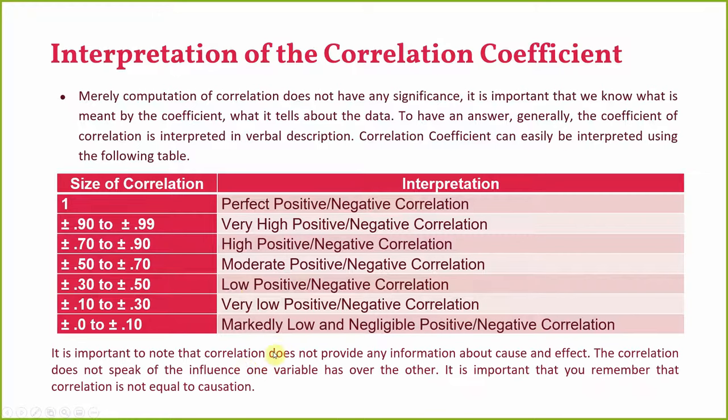It is important to note that correlation does not provide any information about cause and effect. There is no clear demarcation that X is causing Y — it is just the analysis of relationship. You cannot establish causation based on correlation. Correlation is not equal to causation; you cannot say X causes Y. It is simply an interpretation of how two variables are related.